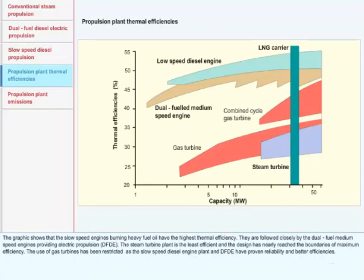Propulsion Plant Thermal Efficiencies: The graphic shows that the slow speed engines burning heavy fuel oil have the highest thermal efficiency. They are followed closely by the dual fuel medium speed engines providing electric propulsion. The steam turbine plant is the least efficient and the design has nearly reached the boundaries of maximum efficiency.